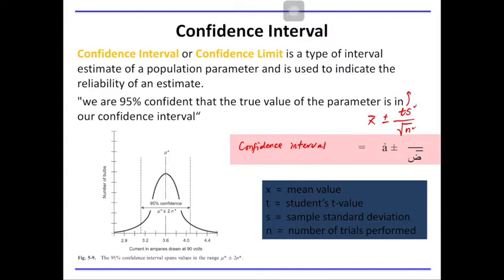n is the number of measurements. As I discussed previously, the 95% confidence interval is within this range. So if our mean is 3.6, then 3.6 plus 2 standard deviations is the upper limit at around 4.08, and around 3.1 is the lower limit.